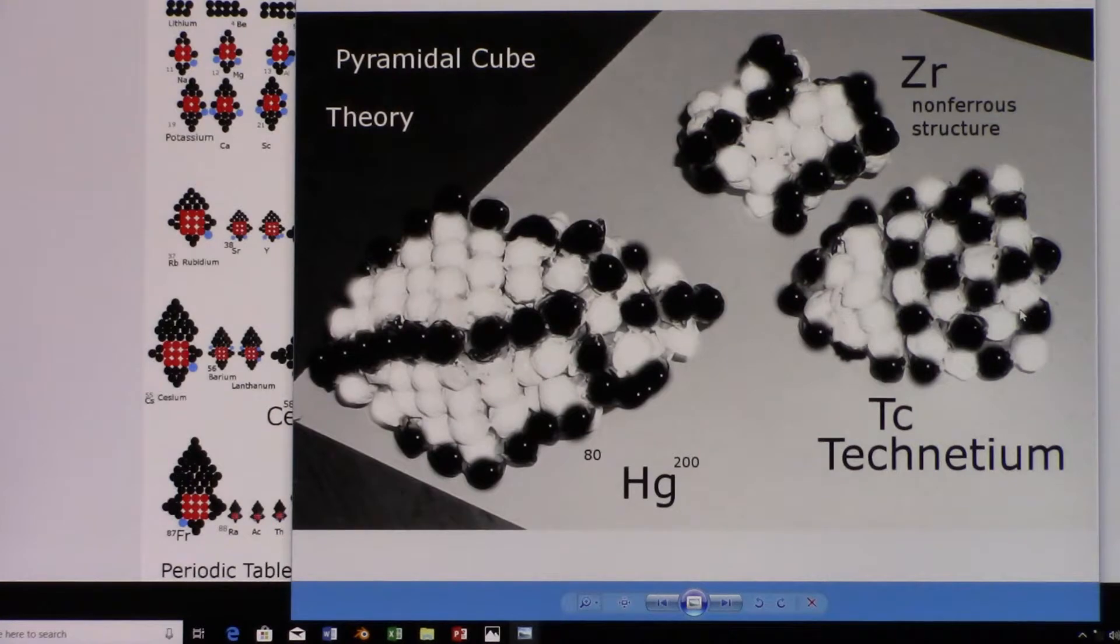The pyramid on one side has a line of protons similar to iron or zirconium. Zirconium is on the top right there. It has two loops of protons in black, but it's non-ferrous because it is not coaxial. And then mercury's on the left here.